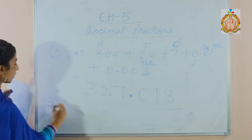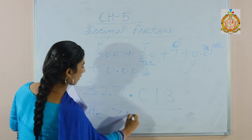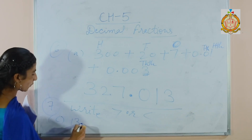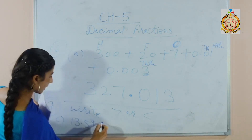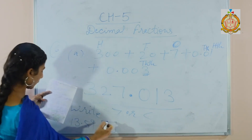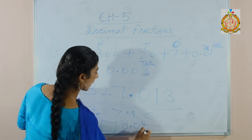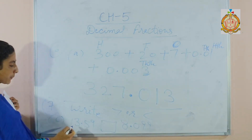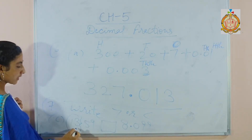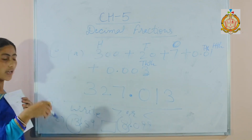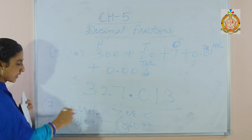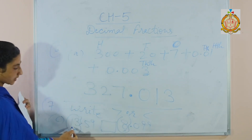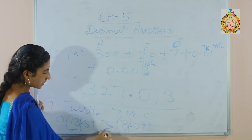Now 7th part: you have to write the symbol greater than or less than. For example, part C: 13.59 compared to 8.099. In the box you have to put the symbol. Students, while comparing two decimal fractions, firstly we compare the whole number part. The decimal fraction having the greater whole number part is greater. Here there is 13 and here is 8 — 13 is greater, so this decimal fraction is greater.